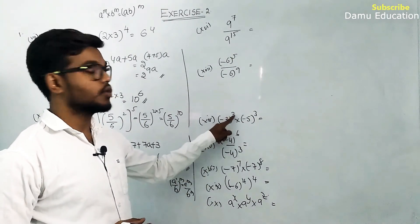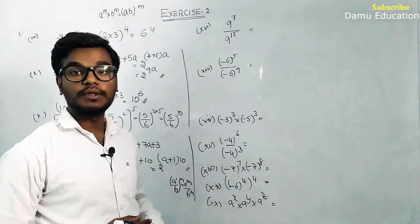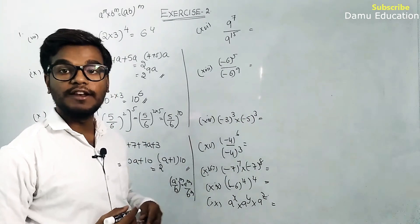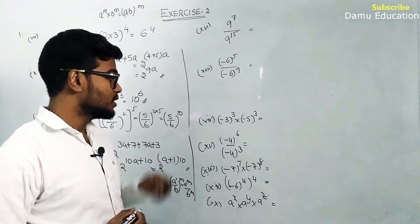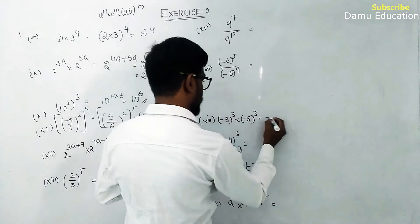Next question: minus 3 whole cube and minus 5 whole cube.